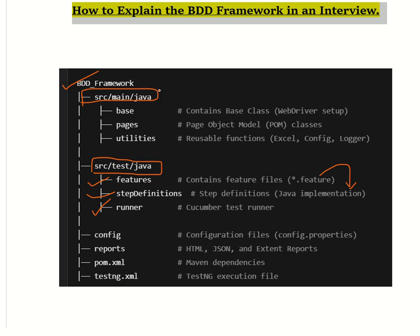Moving to the src/main/java package: it contains a base class, a pages folder, and a utility folder. The pages folder contains Page Object Model classes — it separates UI locators from the test logic for better usability. Key points of the pages folder: it uses Page Factory for element initialization and keeps UI element locators separated from test logic.